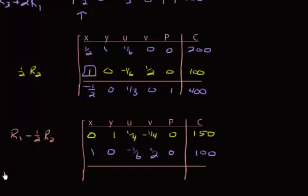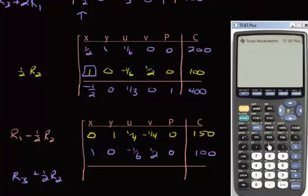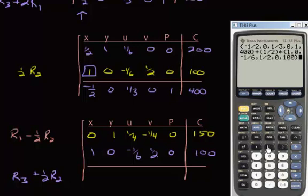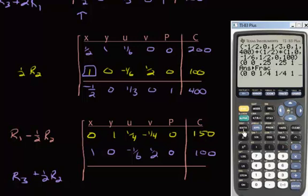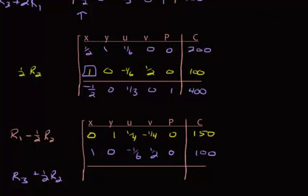Finally, handle row three — it has a negative one-half, so add one-half times the pivot row. On the calculator: row three plus (1/2) × row two. The result is 0, 0, 1/4, 1/4, 1, and the constant is 450.